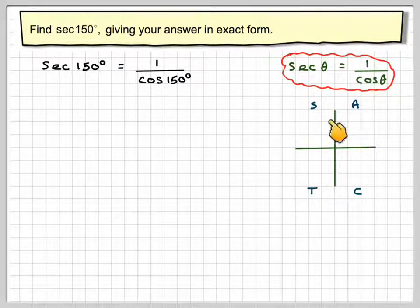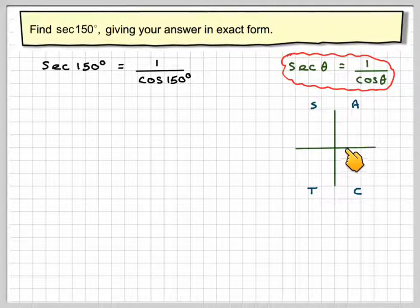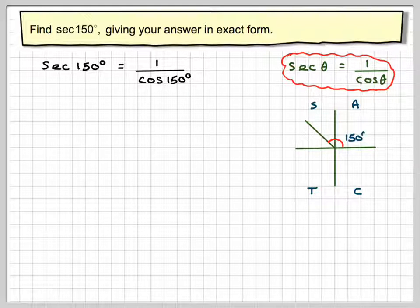Now if we do South Asian tennis club, this tells us in which quadrant the angle is positive. Remember, angles start from here and you measure around anticlockwise. So 150 is going to be in what's known as the second quadrant.